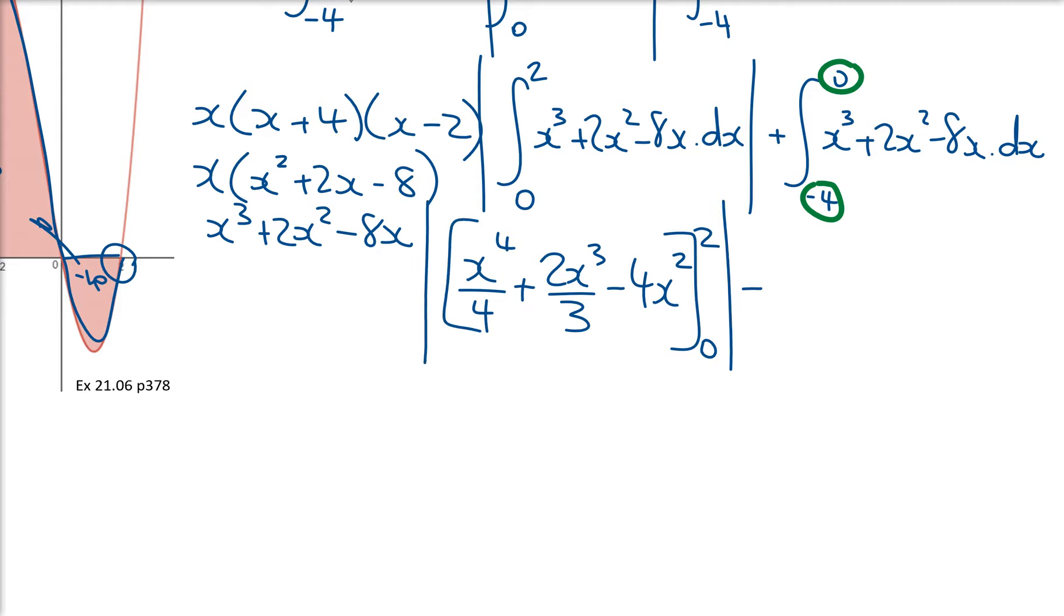I'm going to add on x to the 4 over 4 plus 2x cubed over 3 minus 4x squared, zero to negative 4. And now all I do is just plug my numbers in and see what comes out of my calculator.